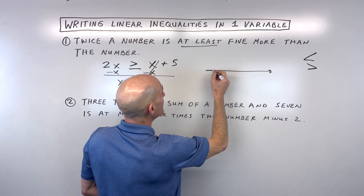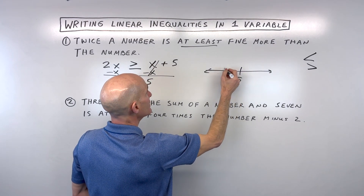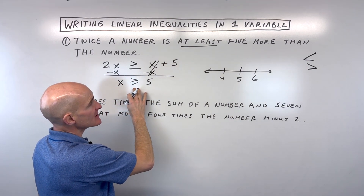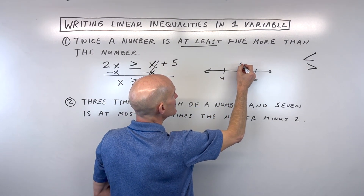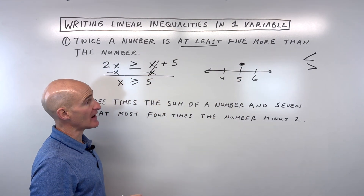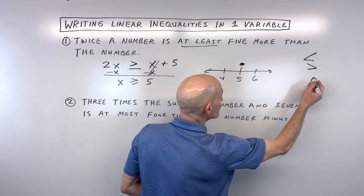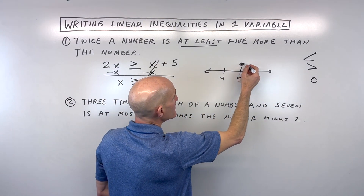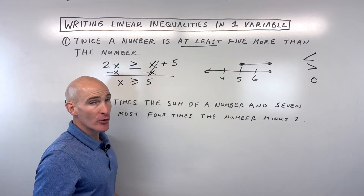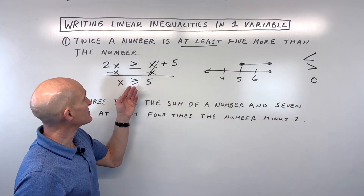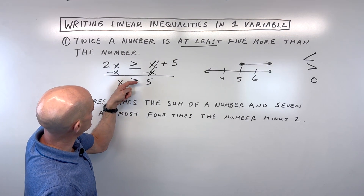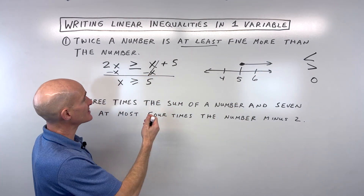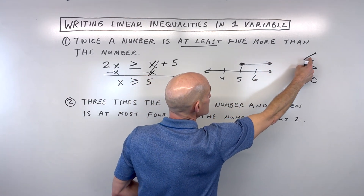We can graph this on the number line — here's five, four to the left, six to the right. Since x is equal to five, it's going to be a closed circle. If it was strictly greater than or less than but not equal to, we would draw an open or hollow circle. The values of x are greater than five, so we shade to the right. Another way to think about this: if your variable is on the left, the inequality symbol acts like an arrow pointing in the direction you shade.